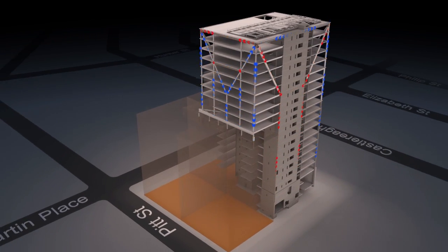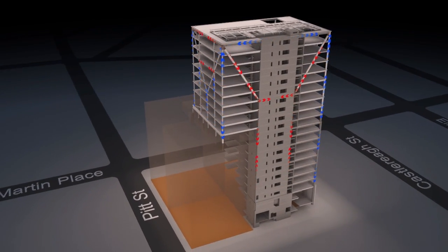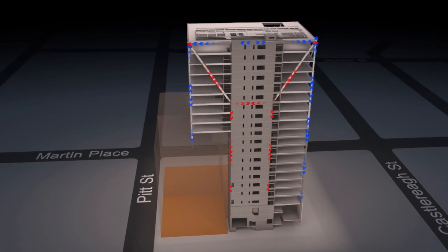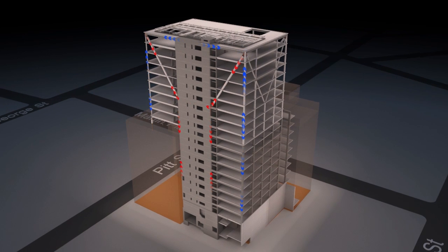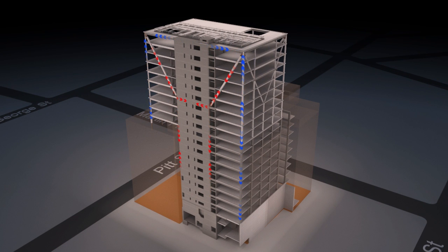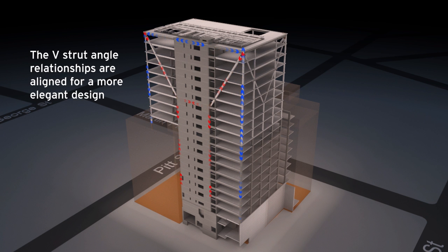The south side view demonstrates how aesthetics played a large part in the structural design. The building is strutted off the main concrete core at level 14 shown by the horizontal red arrows. This is significant because the logical structural solution would be to strut from level 11 where the cantilever commences. However, because the structure is visible from both inside and outside the building, the desire to have an elegant design drove us to have the angle relationships aligning through the building.